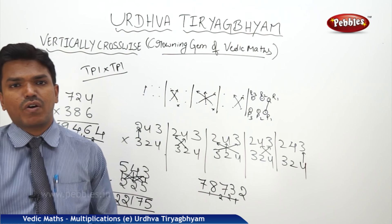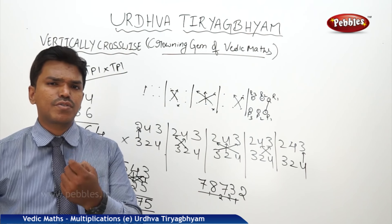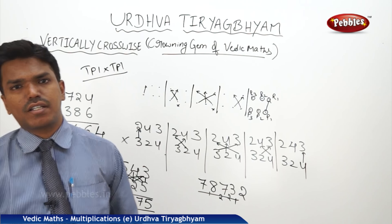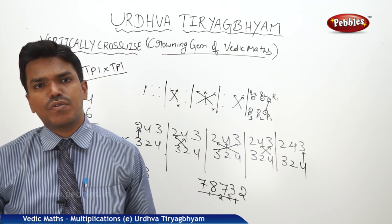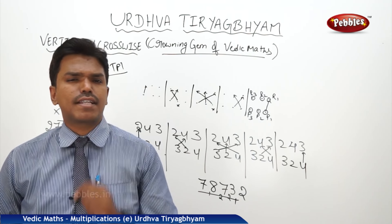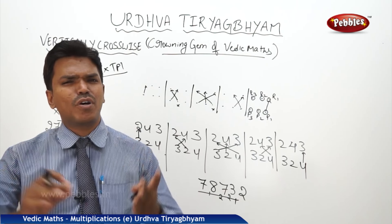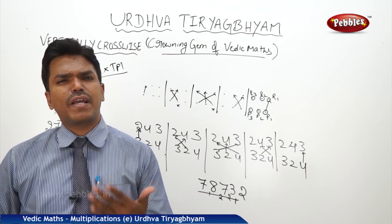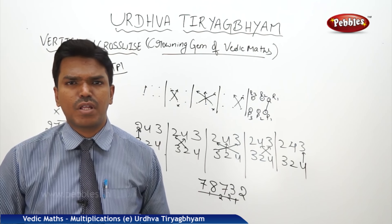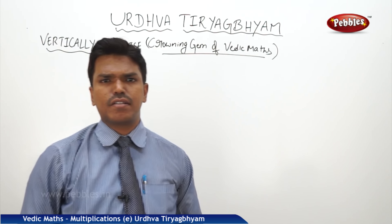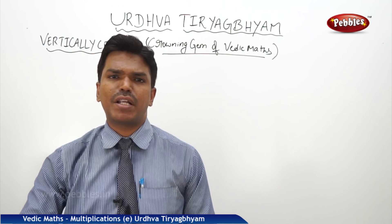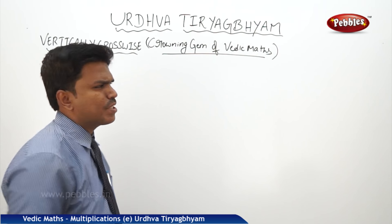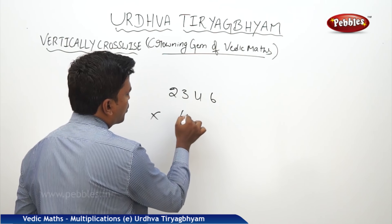Like that, putting the carries in the mind, we can calculate even within a single line. Your mind power is also going to increase if you practice this multiplication technique. Now finally I am going to show one last example — a random one: four digit into two digit. Let us multiply 2346 × 42.